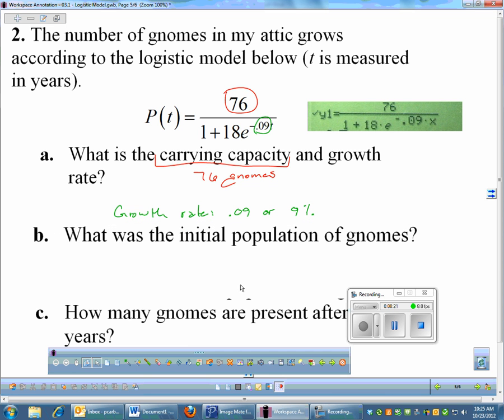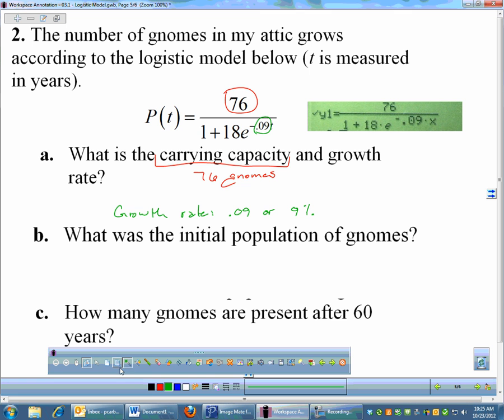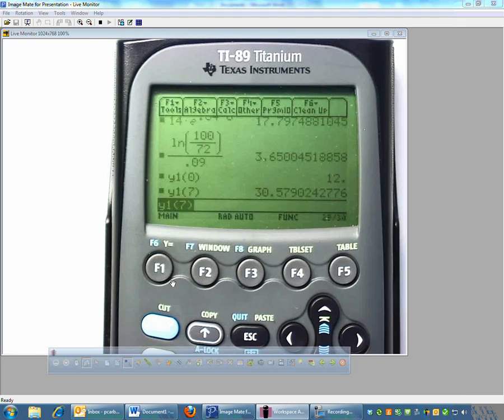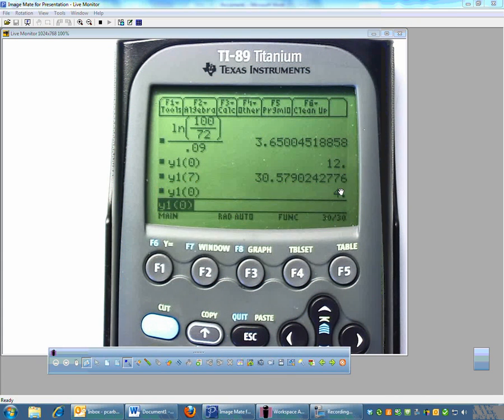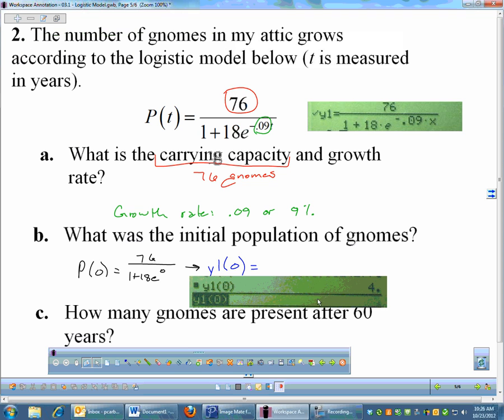Next is the initial population. Remember, initial population is not found in the formula itself. To get the initial population, we have to evaluate P of 0. So we'll plug in 0 for T. That's 76 over 1 plus 18e^(anything times 0) which is 0. Remember, I stored my equation in for Y1. I have my equation in Y1 in my calculator, so I'll go to my calculator screen and do Y1 of 0. And that gives me 4. So I have 4 gnomes at the beginning of time.